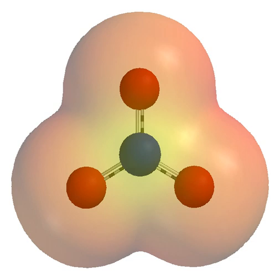A cation is a positively charged ion with fewer electrons than protons, while an anion is negatively charged with more electrons than protons.